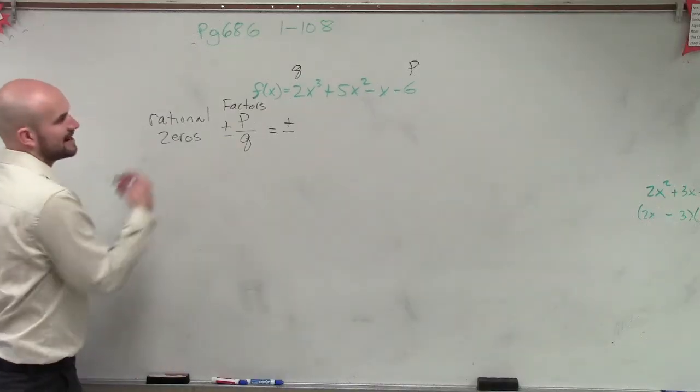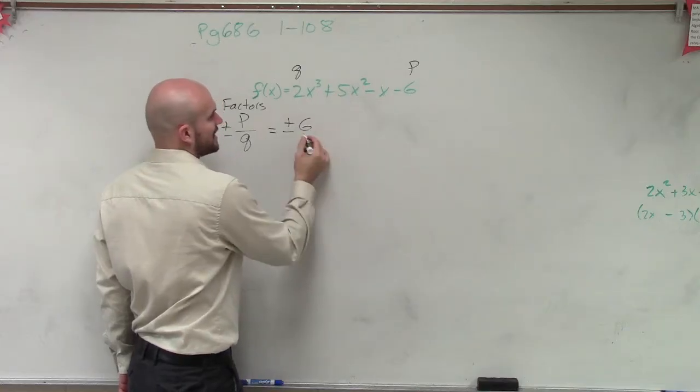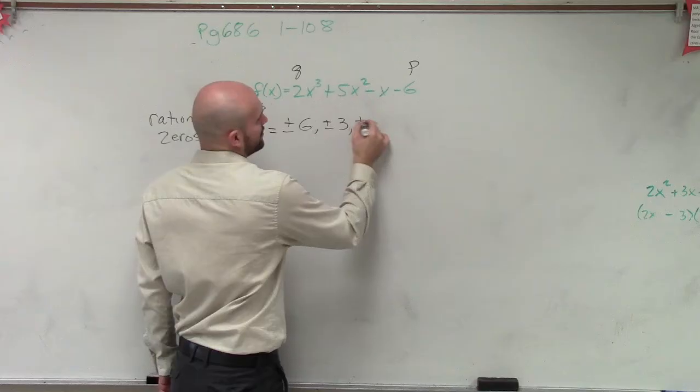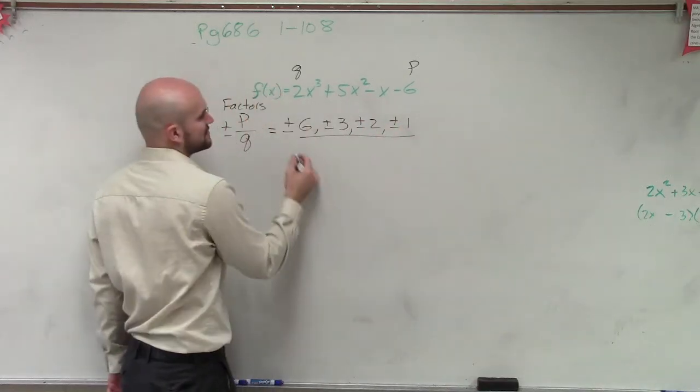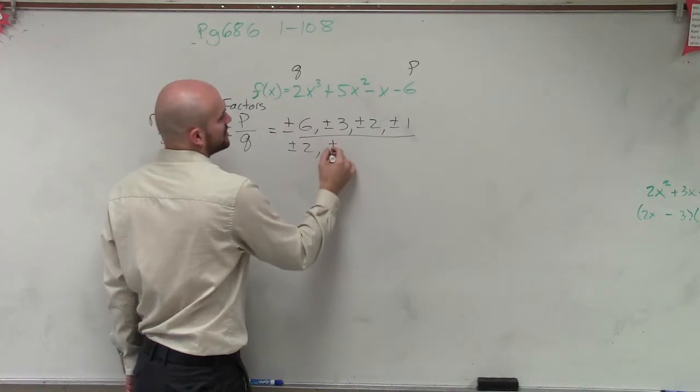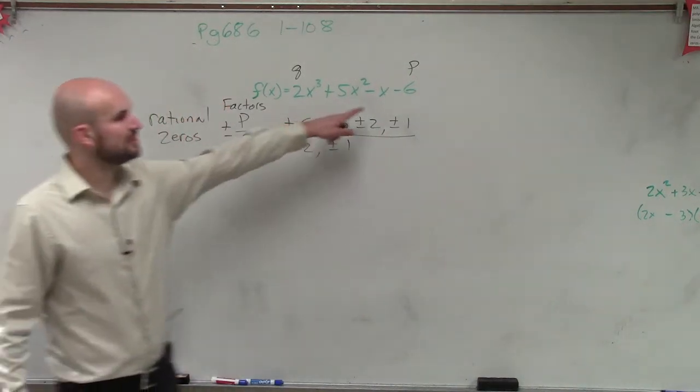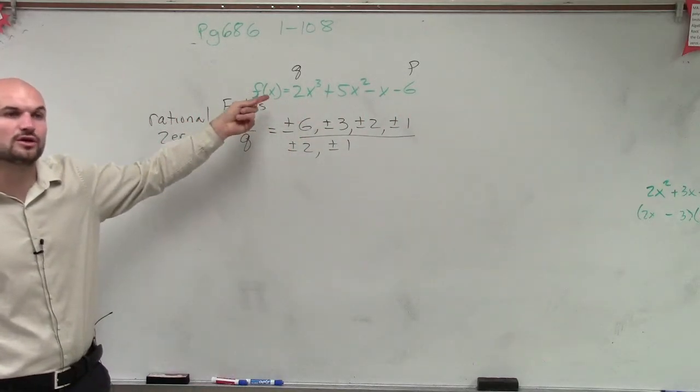So I can take out all the factors of 6. So if I look at this, I could do 6. So plus or minus 6, comma, plus or minus 3, comma, plus or minus 2, comma, plus or minus 1, over all the factors of 2. Plus or minus 2, comma, plus or minus 1. Where did you get p as q? How do you know what p is going to do? p is going to be your constant, and q will always be your leading coefficient.